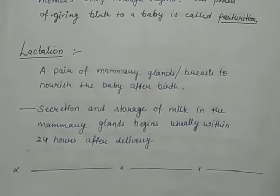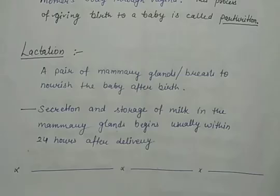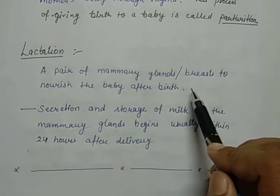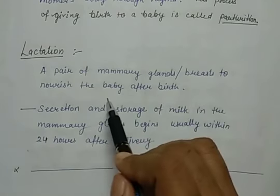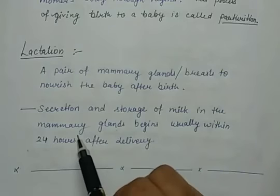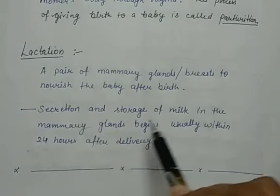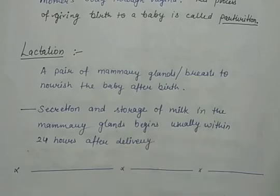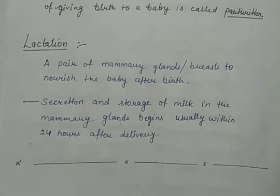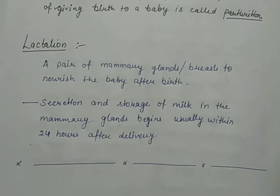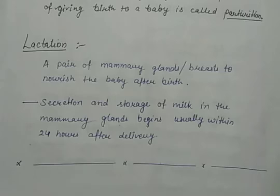Then there is a term called lactation. A pair of mammary glands — or breasts — are present on the body of females to nourish the baby after birth. Secretion and storage of milk in the mammary glands begins usually within 24 hours after delivery. In the next lecture we are going to see the menstrual cycle and understand population control or pregnancy control. Till then, take care and goodbye.